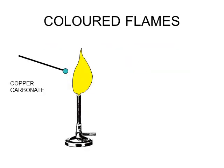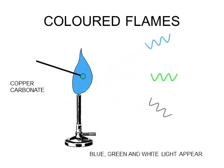Further evidence came from burning compounds in a flame. When copper carbonate burns it emits a green light, and analysis shows it is composed of blue, green and white light. When calcium carbonate is heated in a similar way it gives off an orange-red light. Different elements give off different colours, so there must be some way of explaining why this occurs.